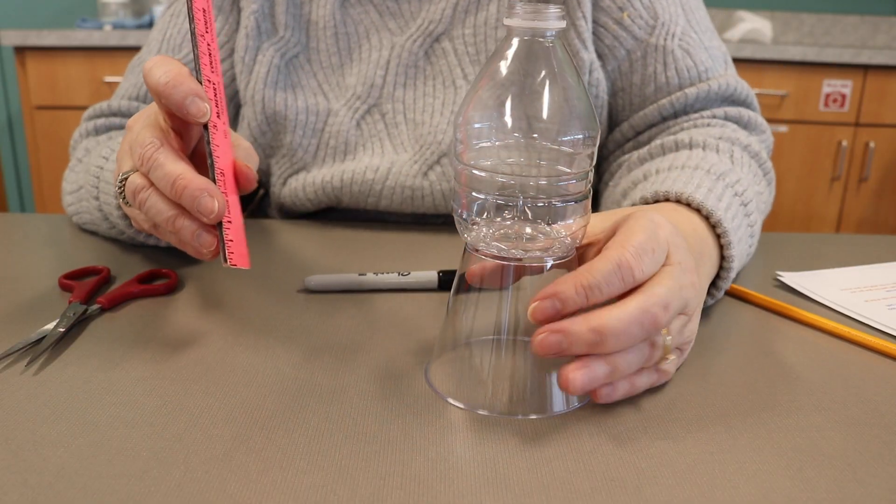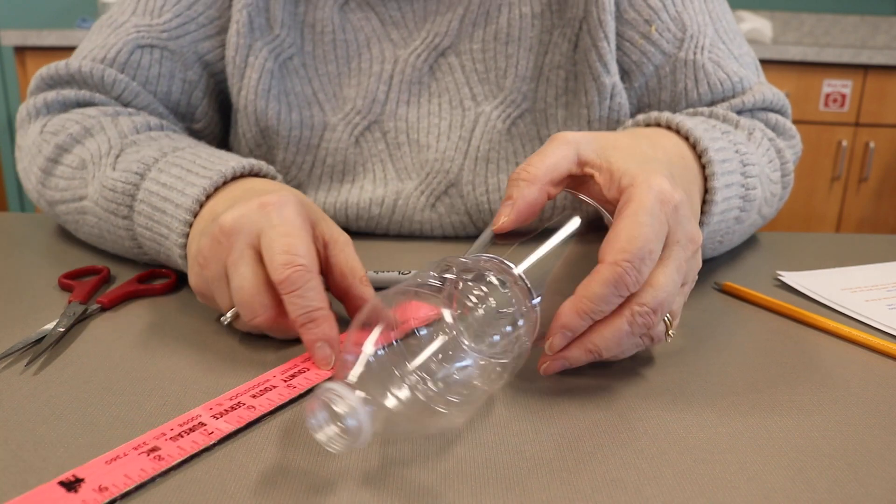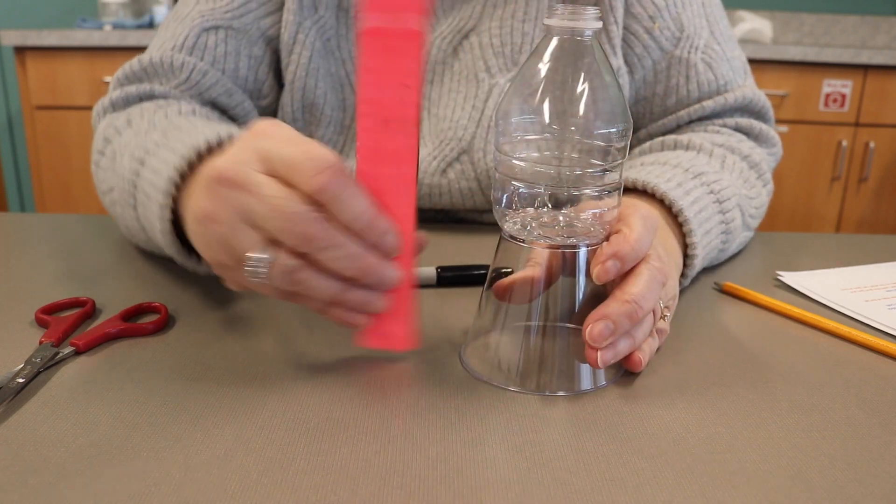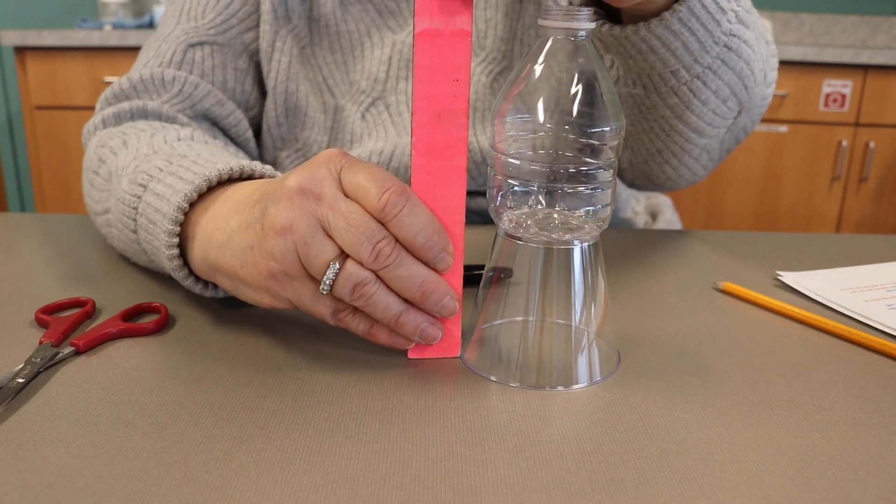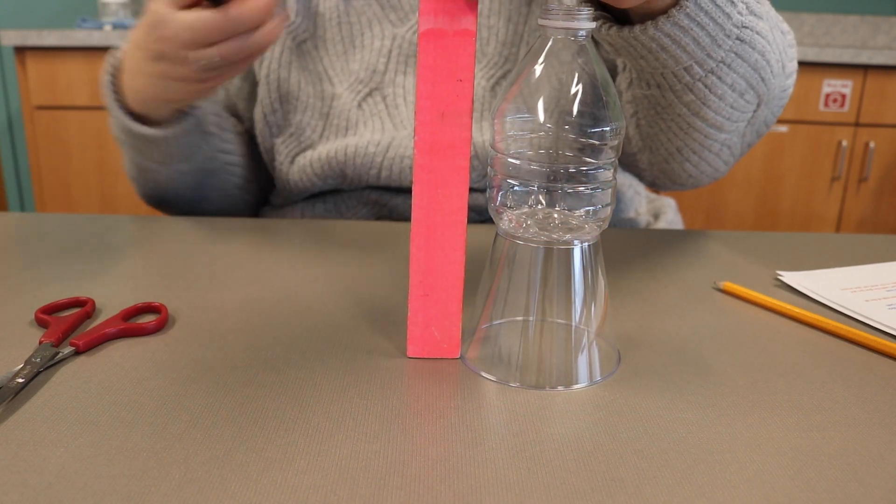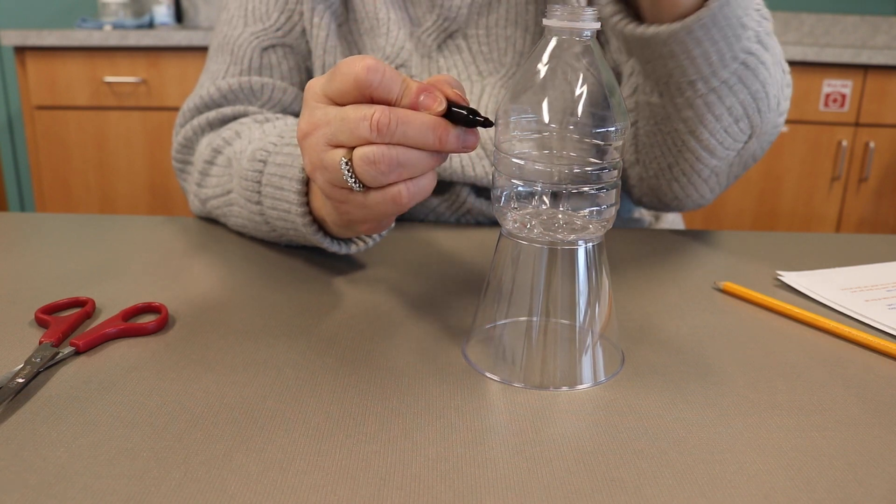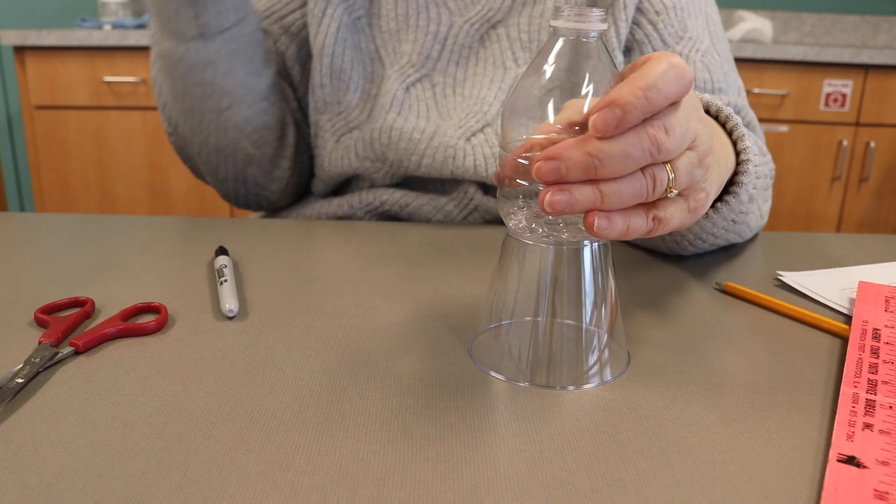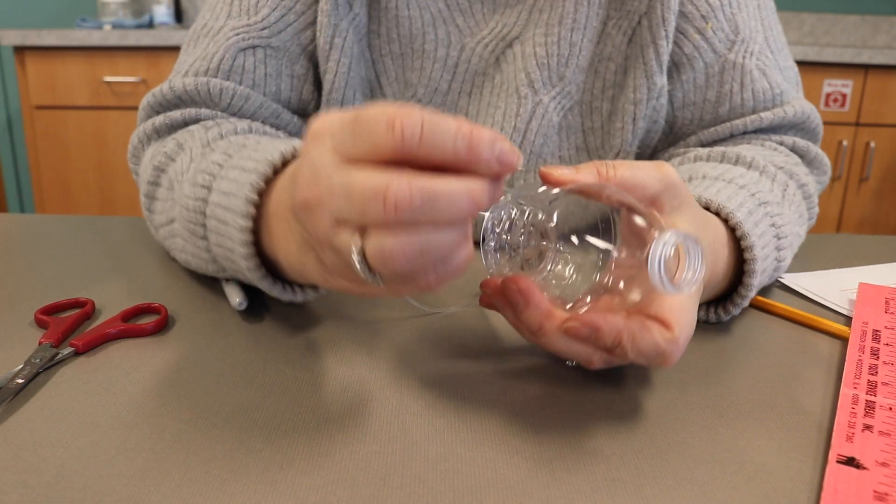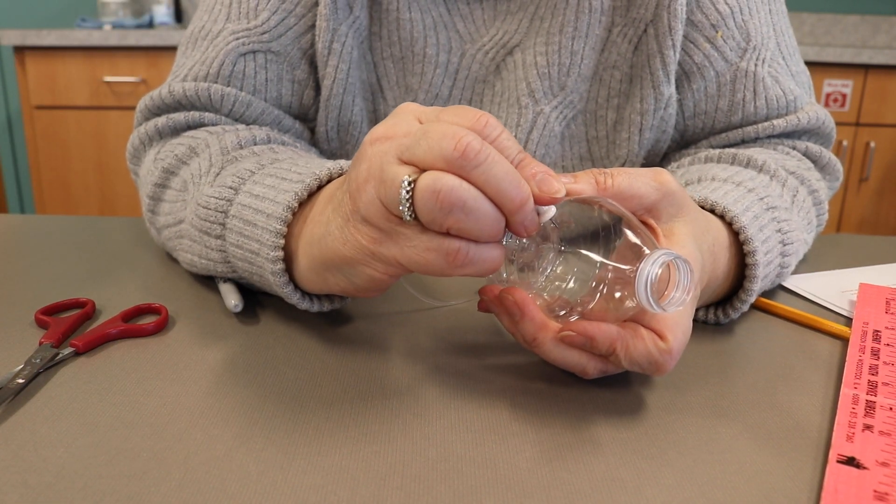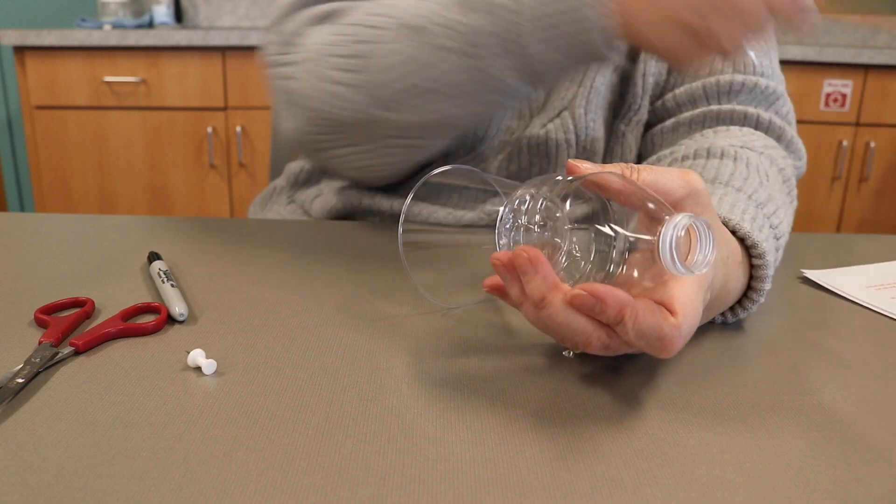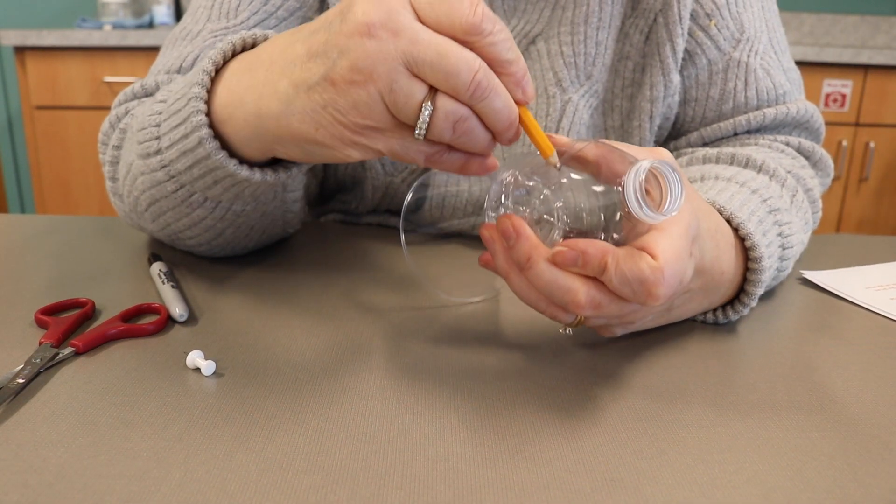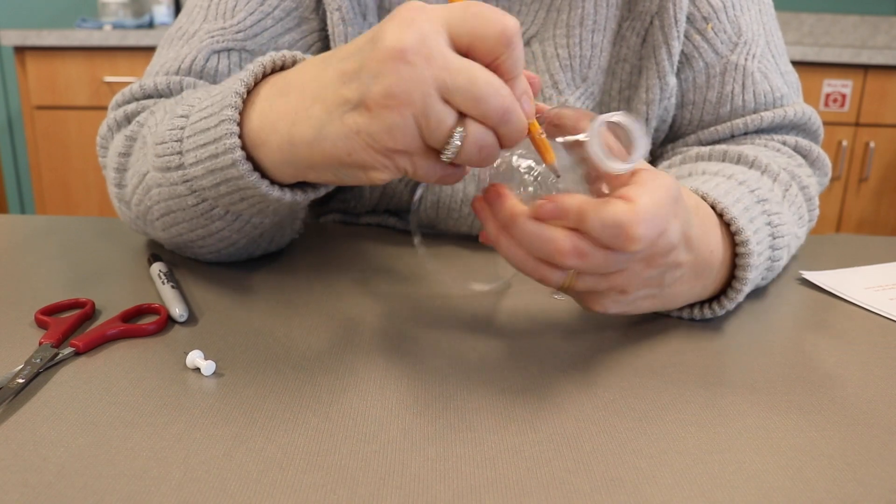Alright, now take your ruler, measure from the bottom of the cup about five inches. Make a little mark right about there. And now take your push pin, break the hole, take your pencil and make a hole.